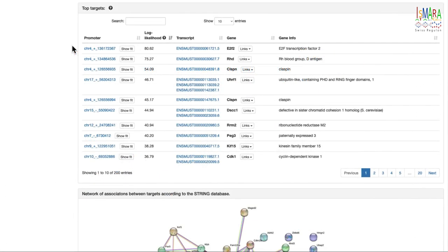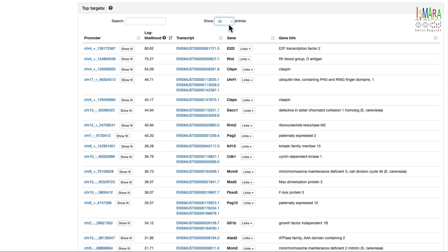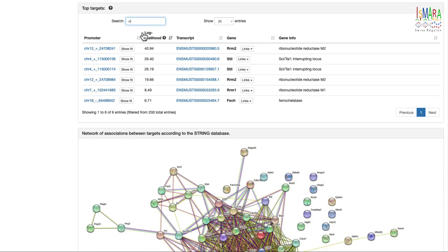ISMARA provides a table with the top target promoters, which includes links to the genome browser view of the promoter, and more information about the associated transcripts and genes. Note that one can interactively change the number of entries shown and search results of the targets. The full list of targets is also provided as a downloadable file.